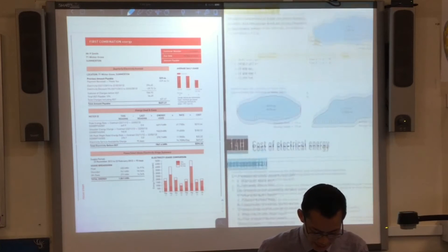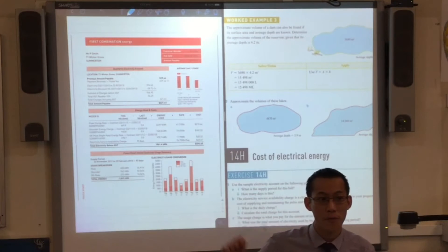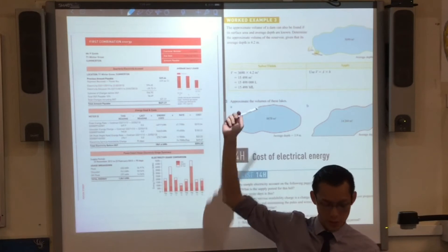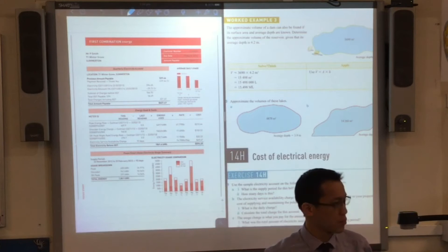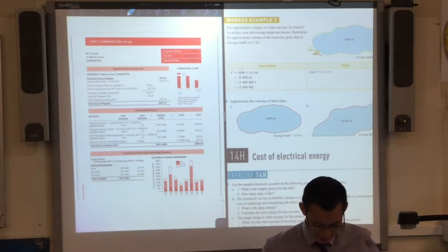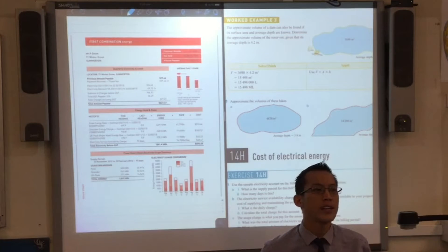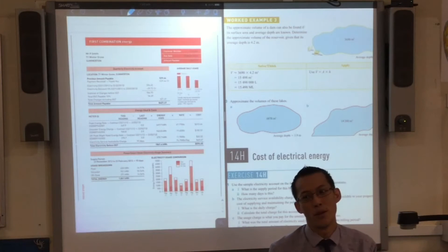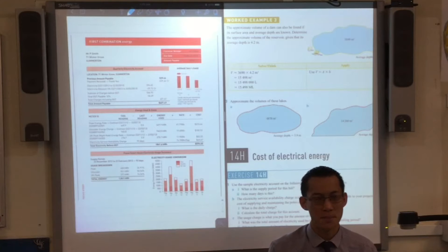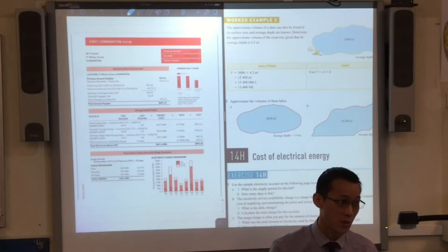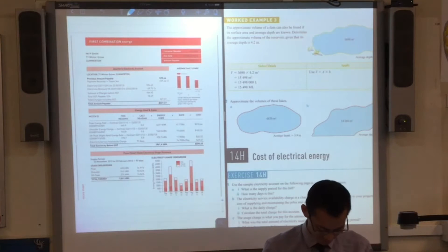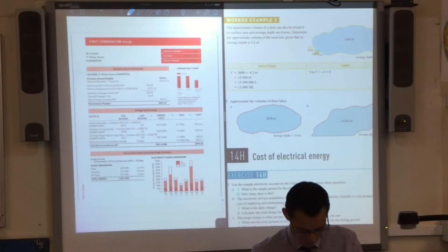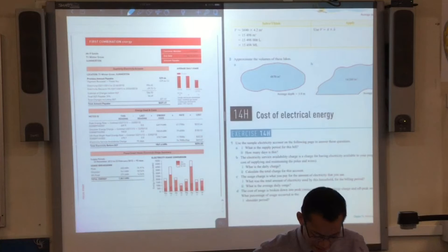So this is what I'm looking at. You'll recognize this is what we finished doing earlier, these approximate areas and that kind of thing. We are looking at the cost of electrical energy because this is mathematics and resources, and electricity is a pretty important resource. Let's have a look.